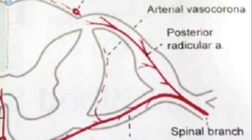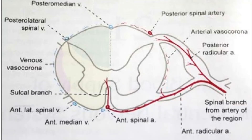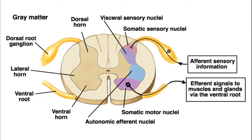You've also got spinal veins, and arteries for each region — for example, the lumbar artery, the sacral artery, etc. Now let's speak a bit about the spinal cord itself: you've got a ventral horn and a dorsal horn.